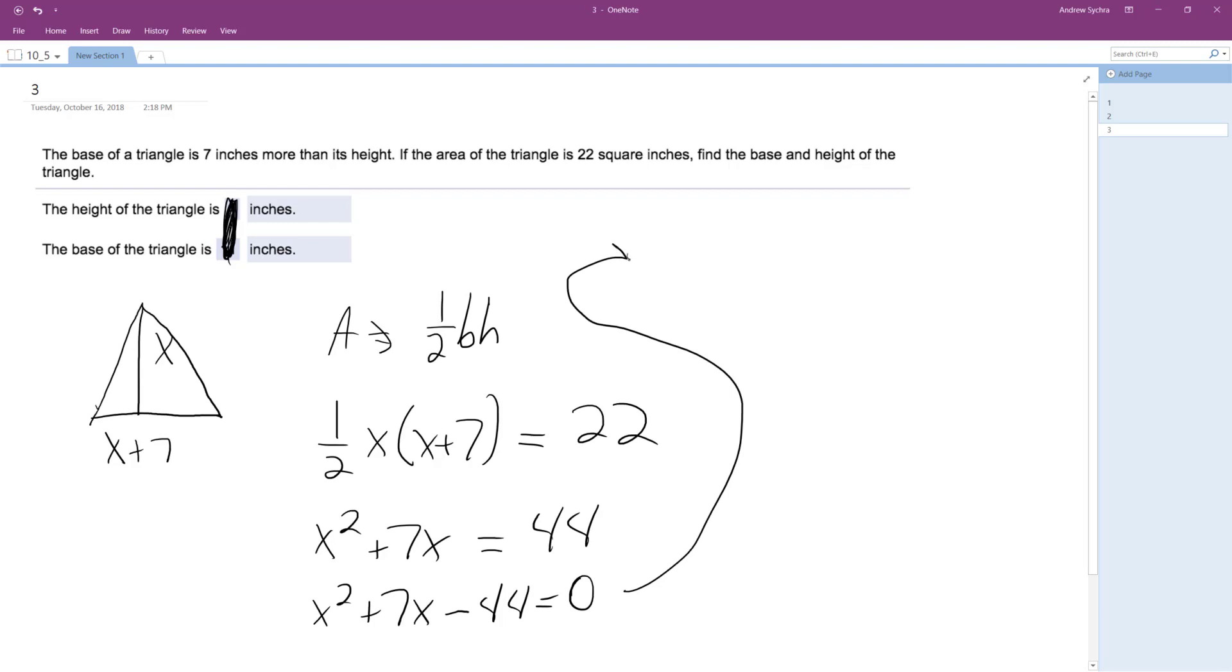So coming over here, I can factor this down to x plus 11 and then x minus 4. So what I end up with is x is equal to negative 11 and 4.